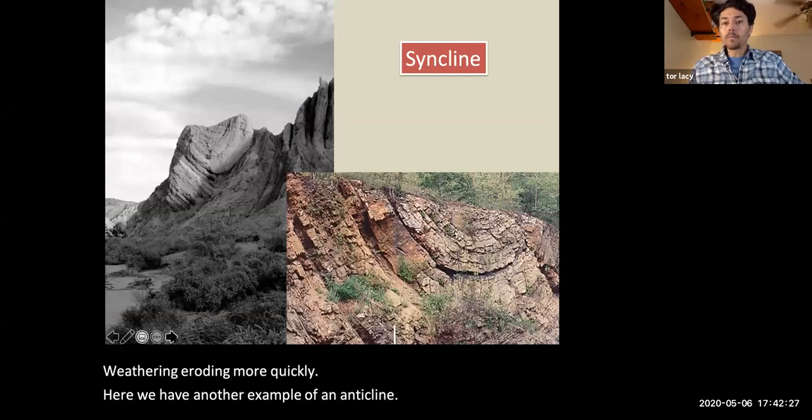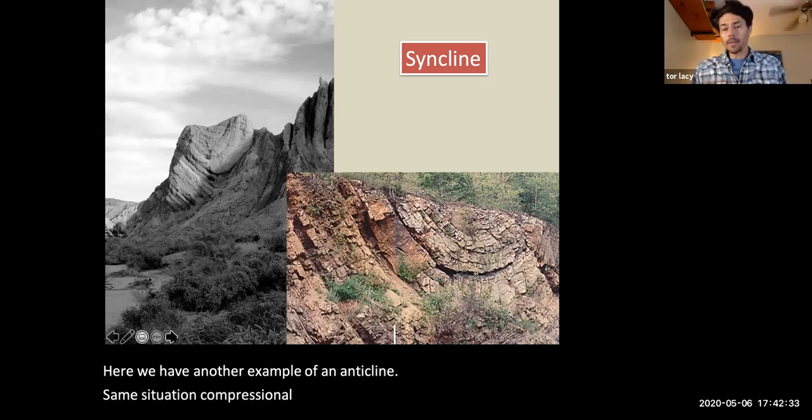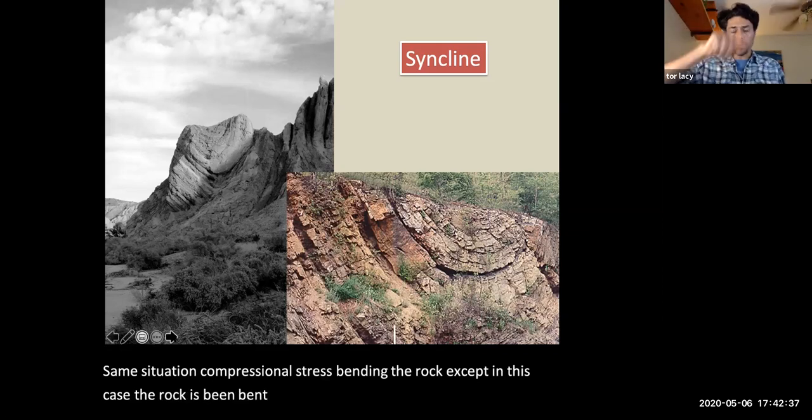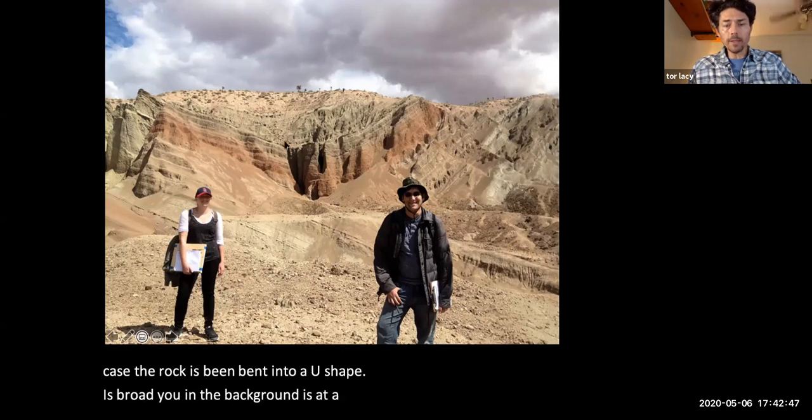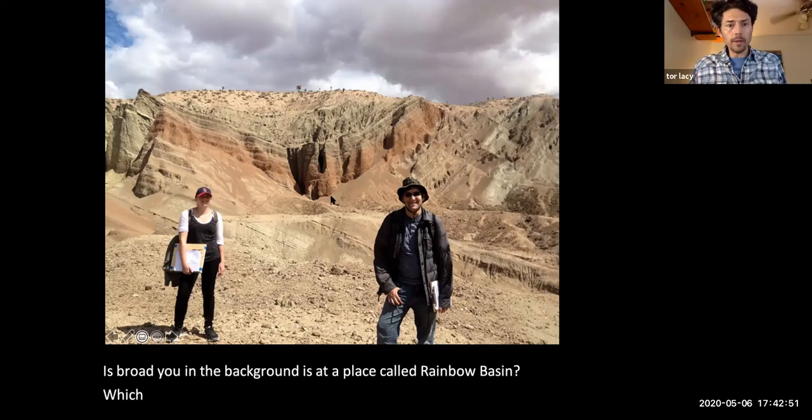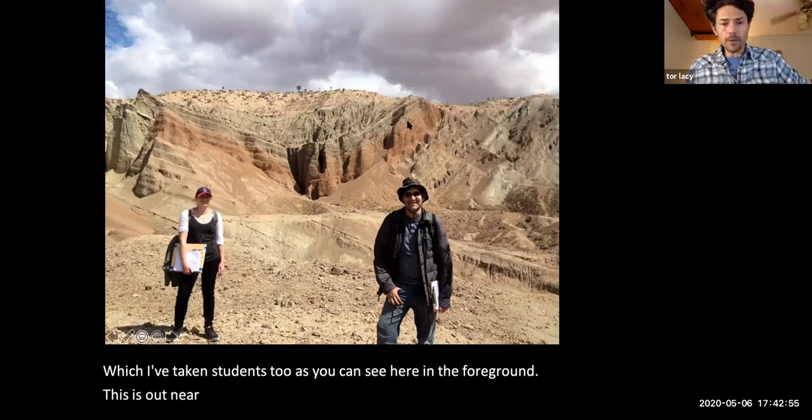Syncline. Same situation, compressional stress, bending the rock, except in this case the rock has been bent into a U shape. This broad U in the background is at a place called Rainbow Basin, which I've taken students to, as you can see here in the foreground. This is out near Barstow, about two and a half hours from Los Angeles.